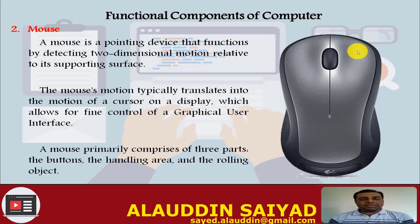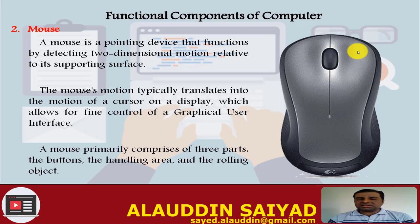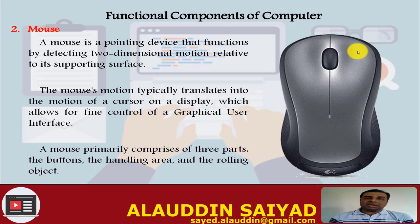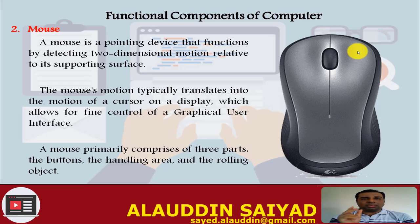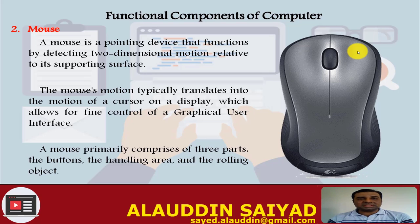A mouse primarily comprises three parts: the buttons, the handling area, and the loading object. There are two main versions of the mouse: the mechanical mouse and the optical mouse. Nowadays we use the optical mouse. In earlier days there was a mechanical mouse with a rolling ball inside it. As you moved the mouse, the ball moved, and that determined the cursor position, which was then processed and displayed on screen.